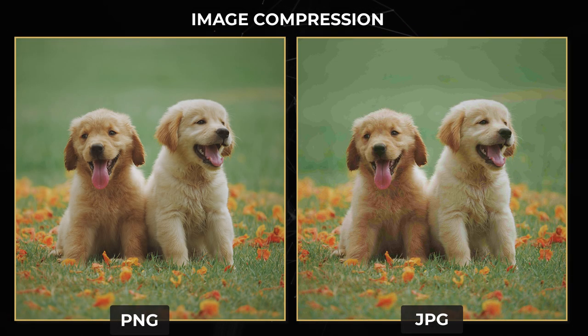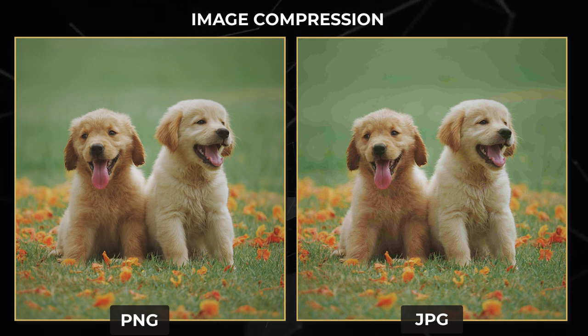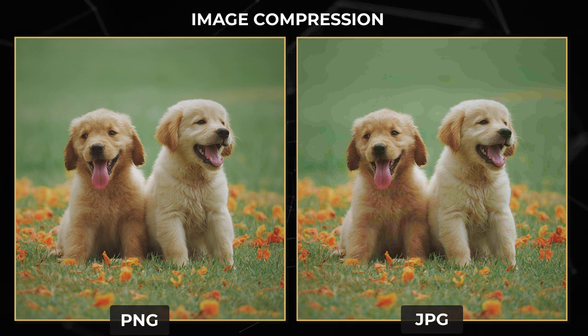Similarly, we get a JPEG file when we compress an input image. The JPEG file is nothing but a representation of the same input image. Image compression therefore falls under image processing.